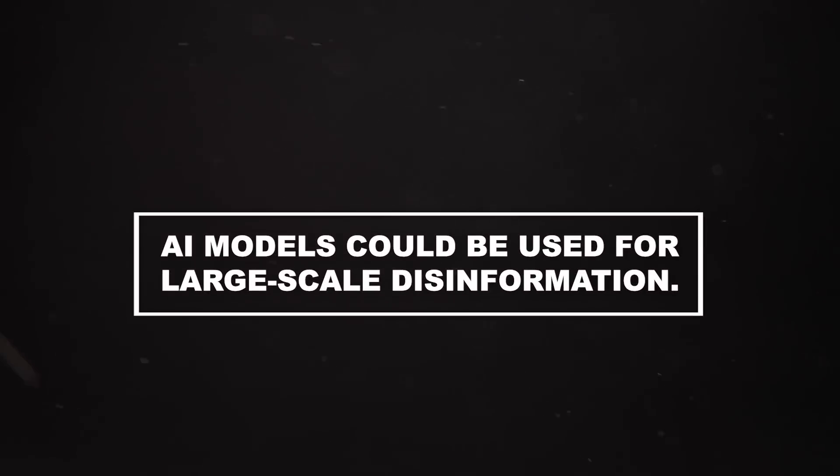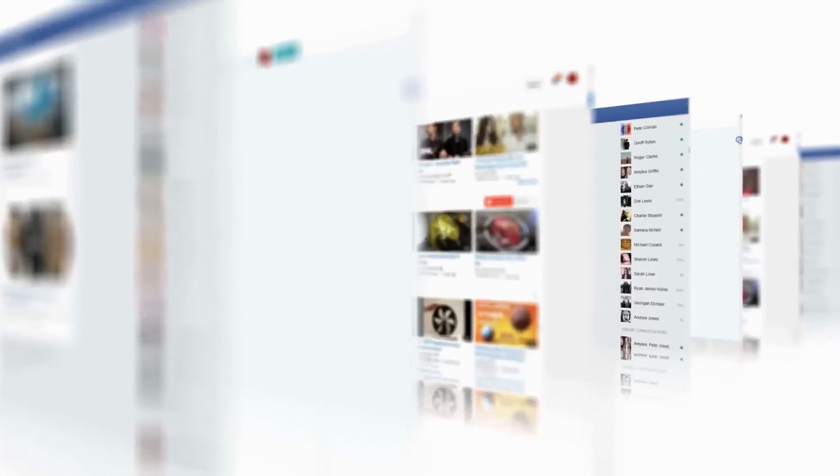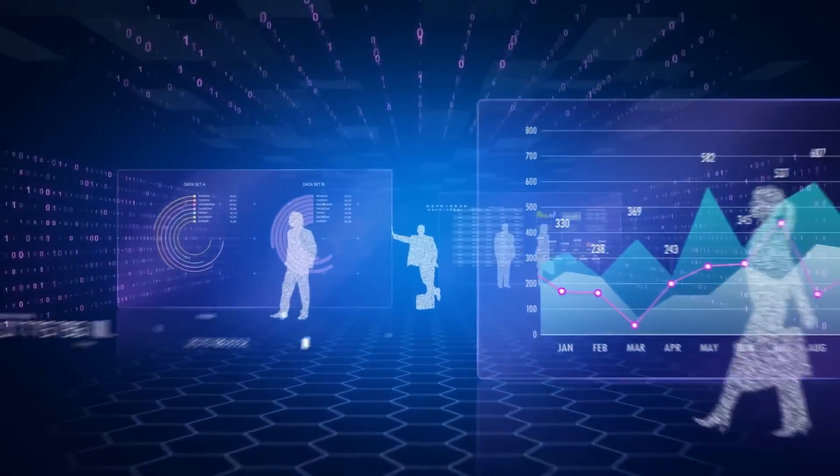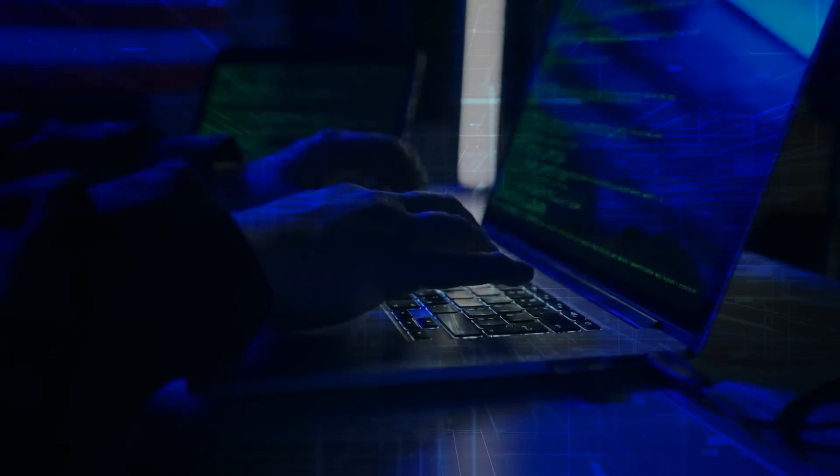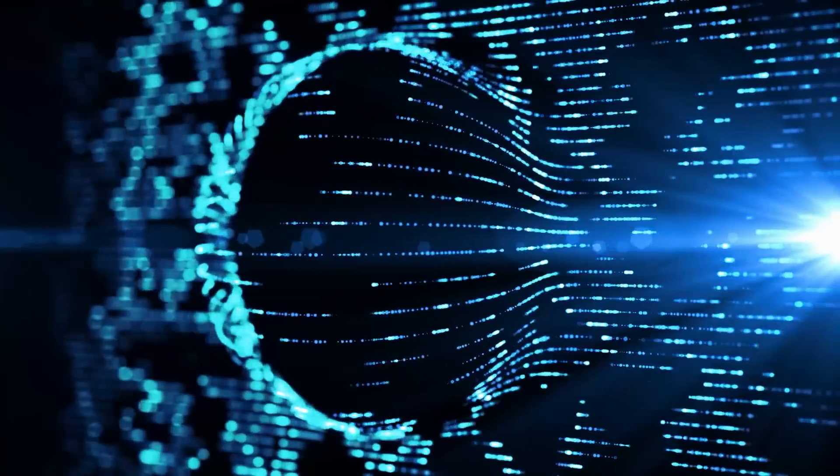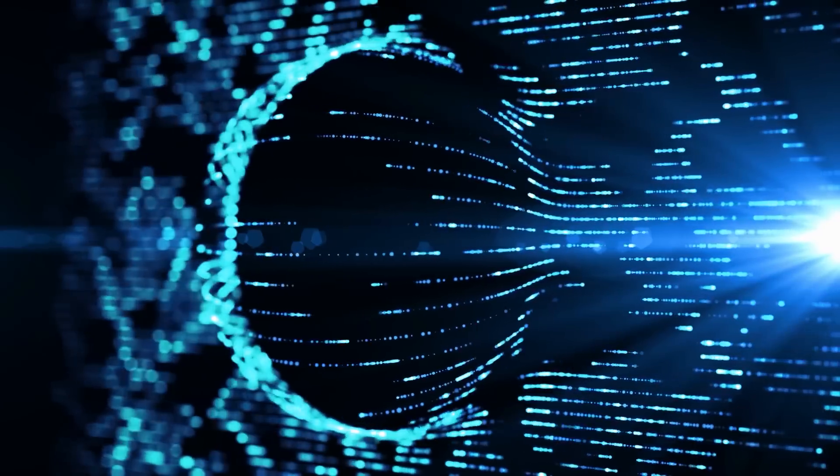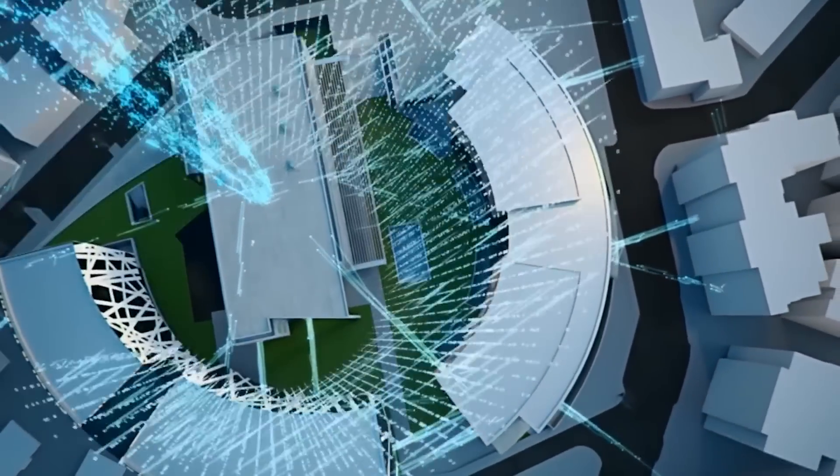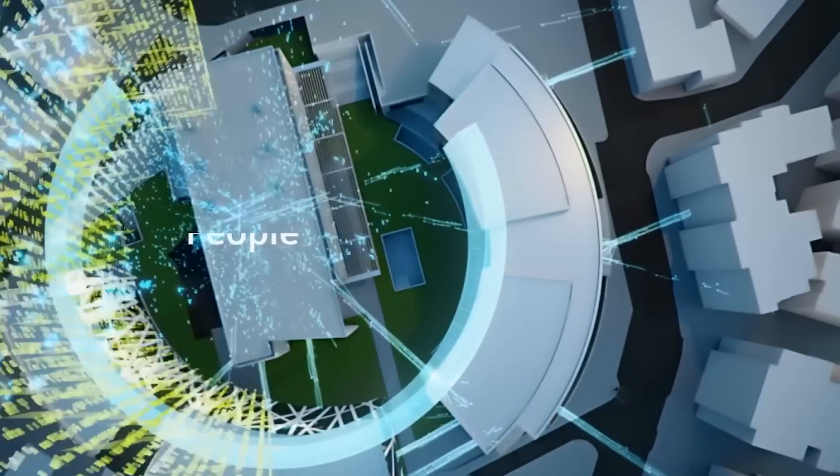Number 9. AI models could be used for large-scale disinformation. In today's digital age, information is power. And with the rise of AI, it's become easier than ever to exploit this power for nefarious purposes. With their ability to process vast amounts of data and mimic human behavior, AI models have become powerful tools for those seeking to manipulate public opinion.